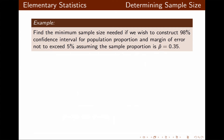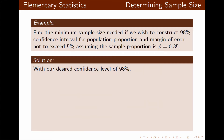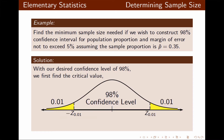In this example, we want to find the minimum sample size needed if we wish to construct a 98% confidence interval for population proportion with margin of error not to exceed 5%, assuming the sample proportion is 0.35. Our desired confidence level is 98%, so we find the critical value. Using the TI command inverse norm with left area of 0.99, mean of 0, standard deviation 1, our critical value Z becomes 2.326.